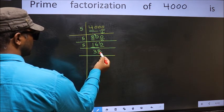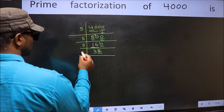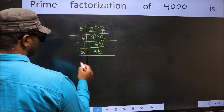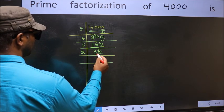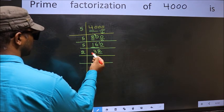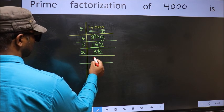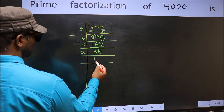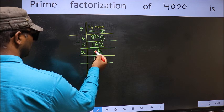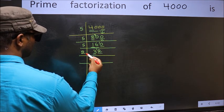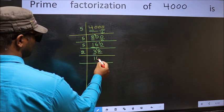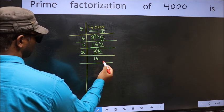Now last digit is 2, so take 2. First number is 3. A number close to 3 in the 2 table is 2 × 1 = 2. 3 - 2 = 1, carried forward: 12. When do we get 12 in the 2 table? 2 × 6 = 12.